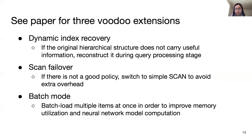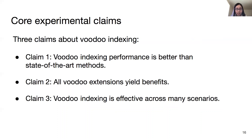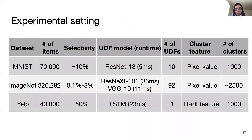Regarding Voodoo Indexing, there are three core experimental claims: Voodoo Indexing performance is better than state-of-the-art methods; all Voodoo extensions yield benefits; and Voodoo Indexing is effective across many scenarios. All of them have been demonstrated by experiments. We test on three real-world text and image databases, and by varying the UDF model and classification targets, there are 103 UDFs in total. The information of datasets, UDFs, and indexes are shown in the table.